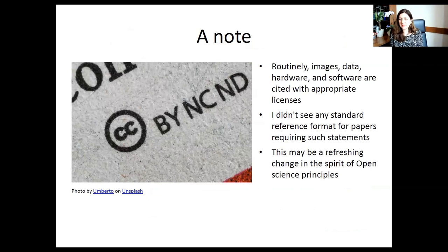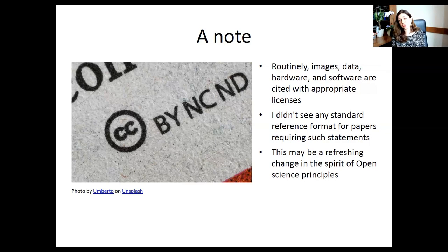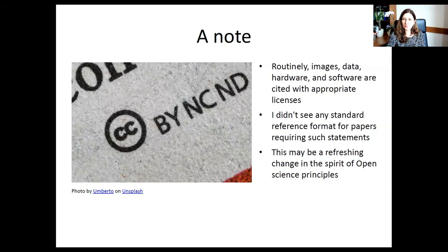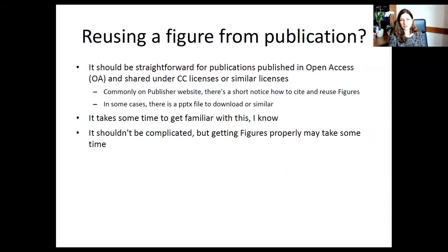Unfortunately, we don't have standards for how to cite data, hardware, and software that you're reusing in a paper, the way we have APA, Harvard, or Chicago styles for other references. Journals do have some guidance on manuscript preparation, and nowadays journals usually state you should cite data with certain requirements. But I think that should change in the spirit of open science, and I hope to inspire people to make sharing resources more routine and more visible.